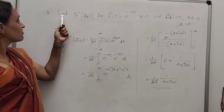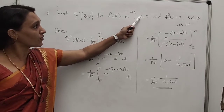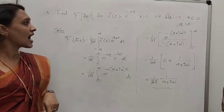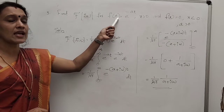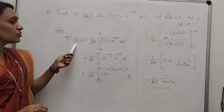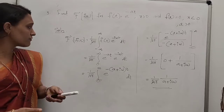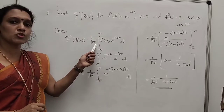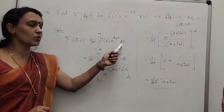The third question: find F(f(x)) for f(x) = e^(-ax) for x > 0 and f(x) = 0 for x < 0, where a is positive. Using the definition: F(f) = (1/√(2π)) × integral from minus infinity to infinity of f(t) × e^(-iωt) dt.